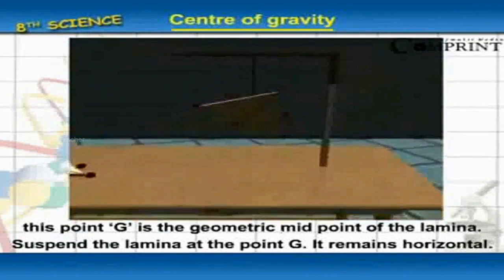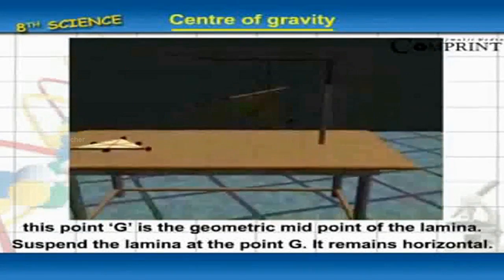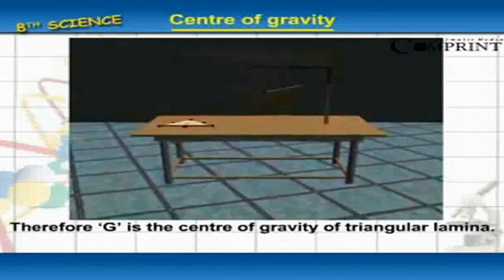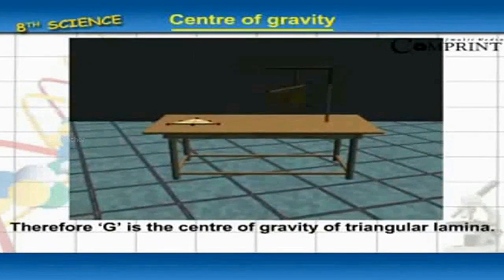Suspend the lamina at the point G as shown in figure 5.3b. It remains horizontal. Therefore, G is the center of gravity of the triangular lamina.